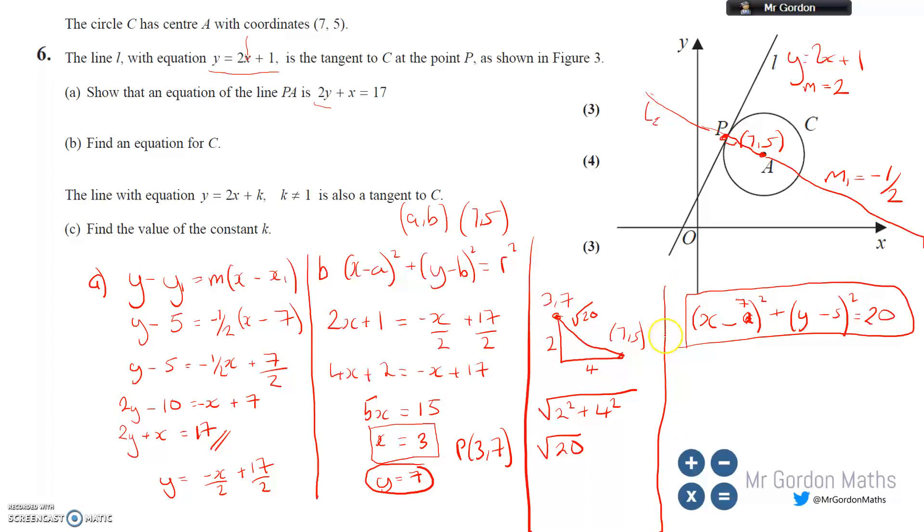Part C: The line with equation y=2x+k is also a tangent to C. It's got the same gradient as L, so we're talking about a line with the same gradient, which is also a tangent here - this parallel line. What is the y-intercept? I know the gradient's 2 because it's parallel, same gradient. If I knew a point on this line, I could work this out. So I'm going to work out the point here.